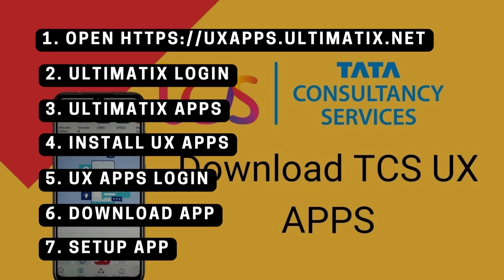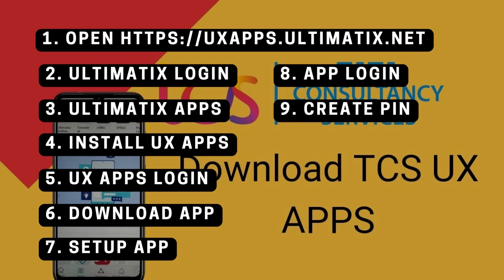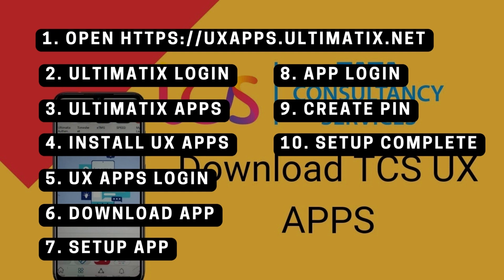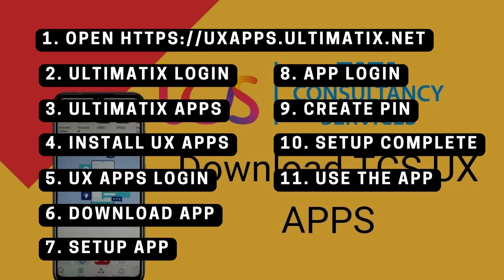Step 7: Setup App — click on Begin Setup. Step 8: App Login — login with your Ultimatics username and password. Step 9: Create PIN — for future access to the Authenticator App, set a unique 4-digit PIN and confirm it. Step 10: Setup Complete — go to the next slide on instructions to use the Authenticator App.